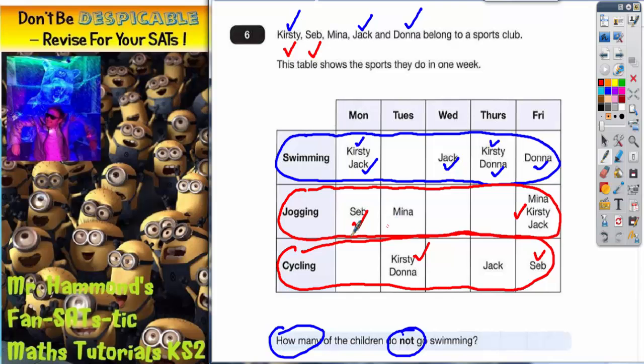Mina. Let's check Mina for jogging. Mina does jogging there and there. But if you check the cycling row, Mina does not go cycling at all. So she doesn't do both of them. So we're not ticking Mina because she doesn't do both.